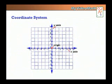The coordinate system has two lines. One is horizontal, it's called the x-axis, and one is vertical, it's called the y-axis. Where these two lines meet, this point is called the origin.